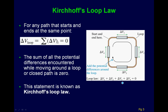Here's Kirchhoff's loop law, which says that when you go around a loop, the change in your potential must be zero. We make an analogy between potential and height — the change in height must also be zero. So if I start here and go around, I have four potential changes, and those four potential changes must add up to zero.